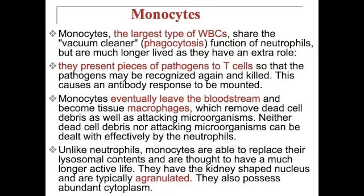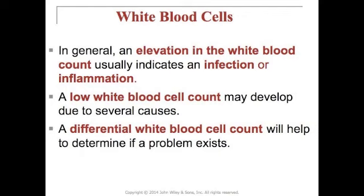Monocytes are granulated and also possess abundant cytoplasm. In general, an elevation in white blood cell count usually indicates an infection or inflammation. A low white blood cell count may develop due to causes such as cancer treatment, certain medicines, some cancers, and infections such as HIV. A differential white blood cell count will help determine if a problem exists.